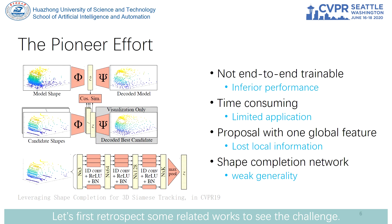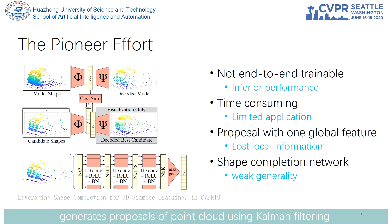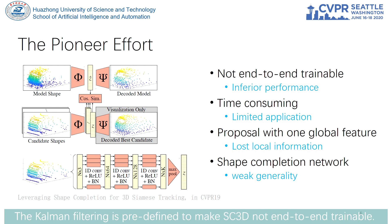Let's first look at some related works to understand the challenge. The first and only pioneer effort, named SC3D, generates proposals from the point cloud using common filtering and conducts template matching in a Siamese fashion. However, the predefined common filtering makes SC3D not end-to-end trainable, along with three other main problems noted on the right.